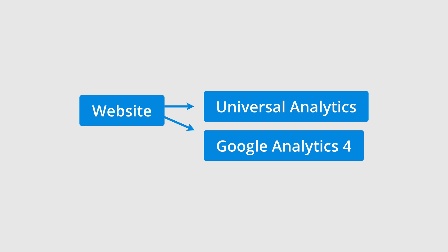I recommend setting up a Google Analytics 4 property in parallel to your existing Universal Analytics property. This will give you access to the latest reports and features. You might love the new reports, or you might prefer the old reports. Either way, you'll be ready with the latest version of Google Analytics.